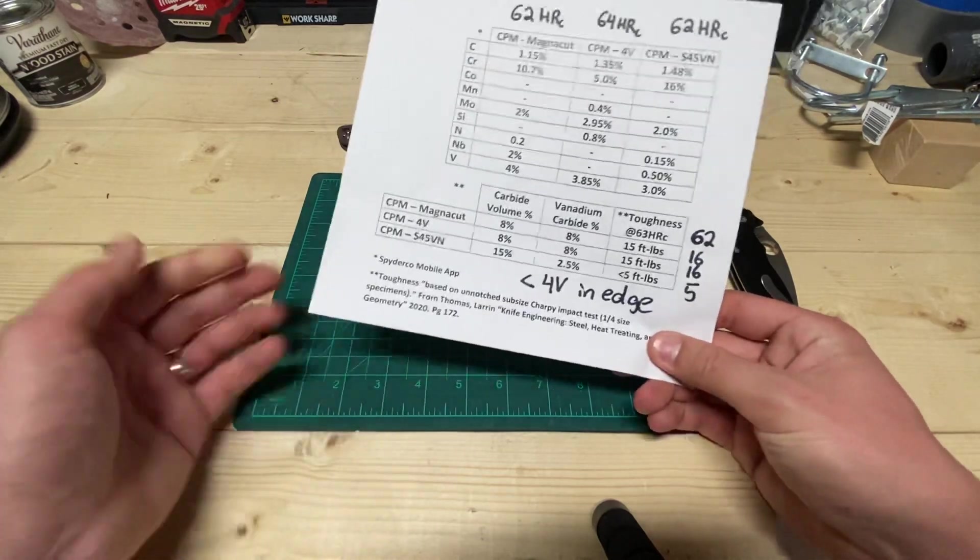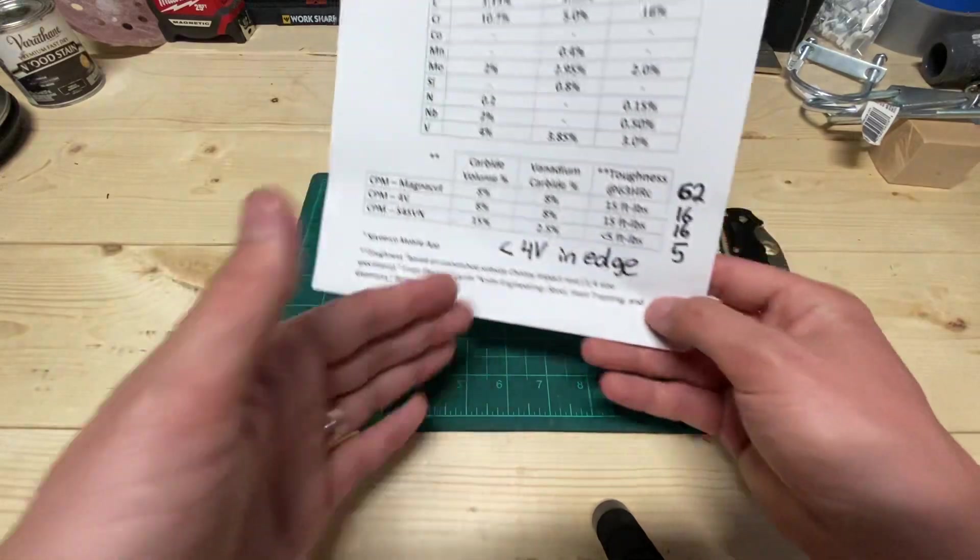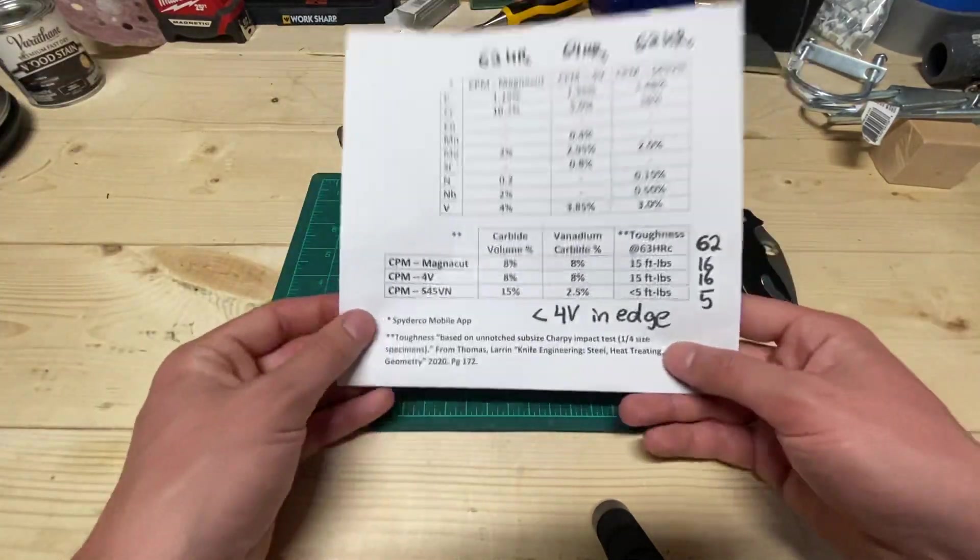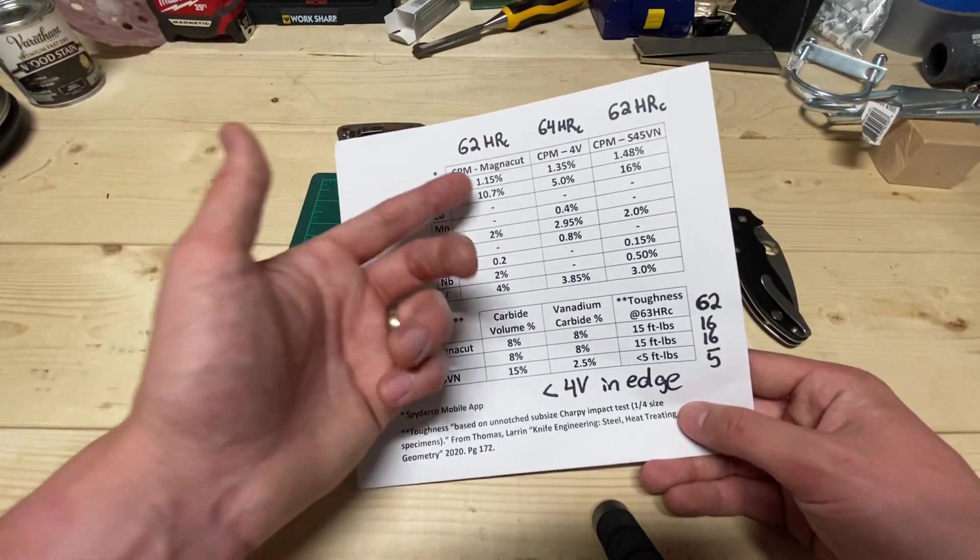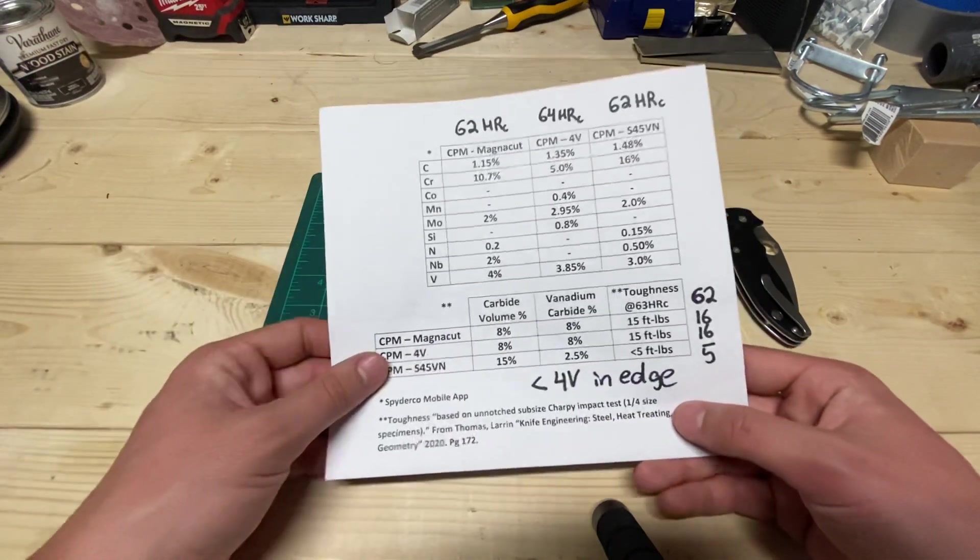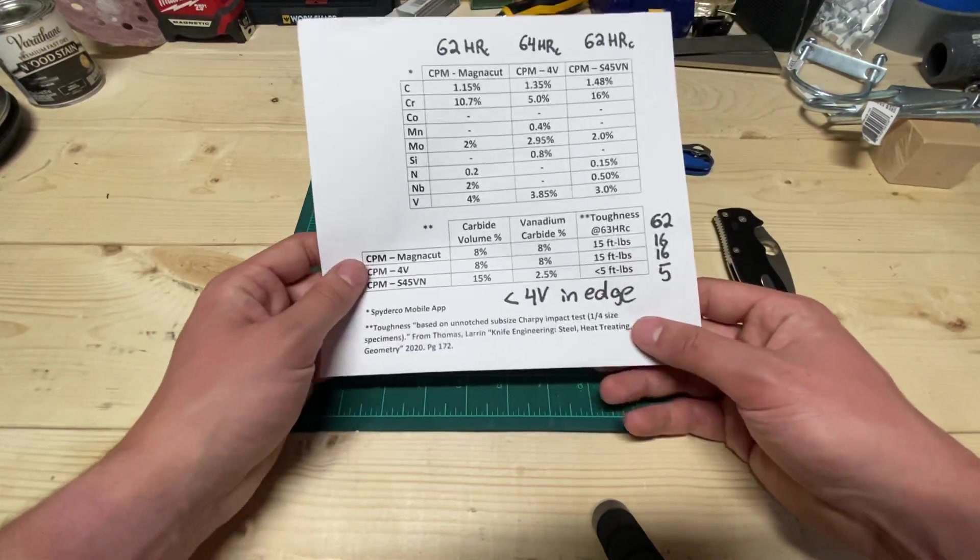You can use it for pretty much anything. You pump up the hardness to increase and then decrease that angle to get the edge retention, or you decrease that hardness or increase the geometry to get the toughness. You can really make a chopper out of MagnaCut, and you can make a high performance kitchen knife out of it. It's just so versatile, all while being stainless, like just beautiful.